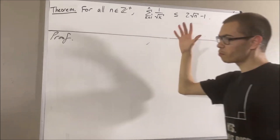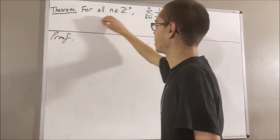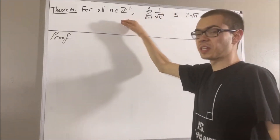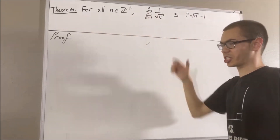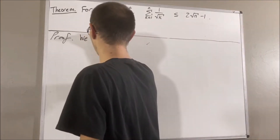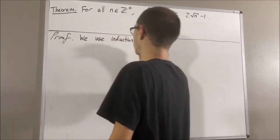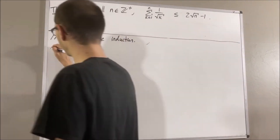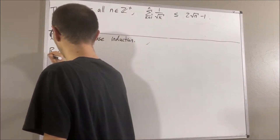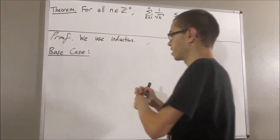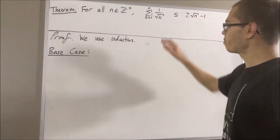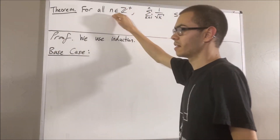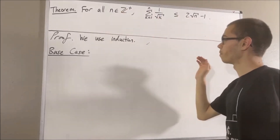Okay, since we're trying to prove a statement about all positive integers, let's use induction. So let's start with the base case. In the base case, we're trying to prove that this is true in the case where n is equal to 1.